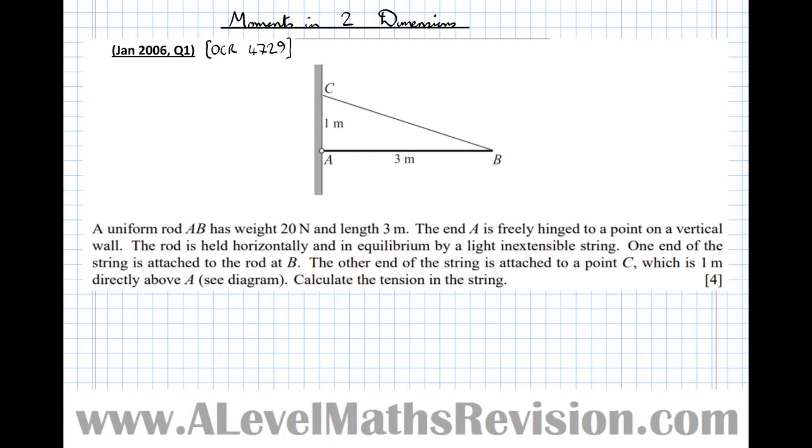One end of the string is attached to the rod at B. The other end of the string is attached to a point C, which is 1 metre directly above A. Calculate the tension in the string.